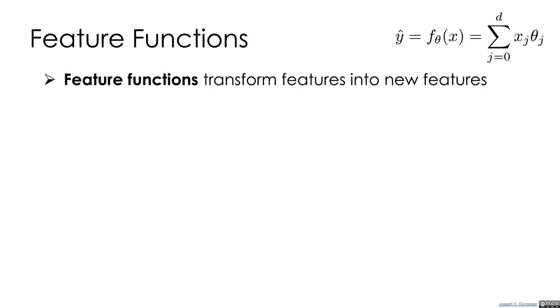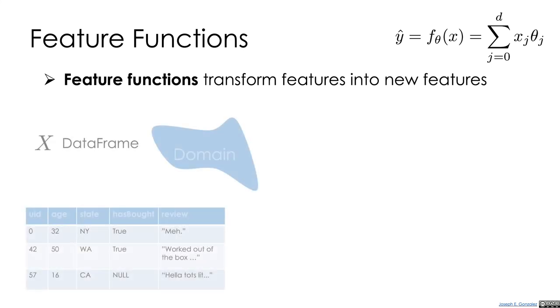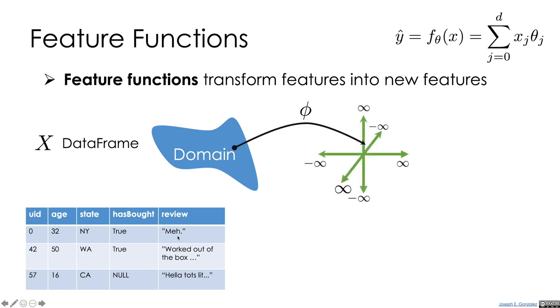We can do this using the concept of feature functions. So a feature function is a mapping from some domain. This is our original data. It could be some table for building a recommendation system. It might be a table that looks like this with information about the user ID, age, state, whether they purchase something, a review.